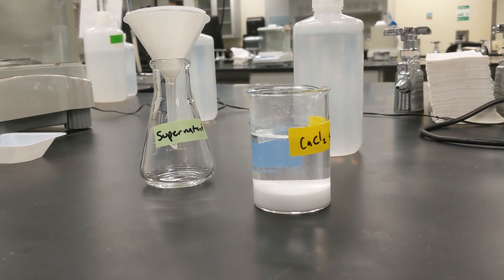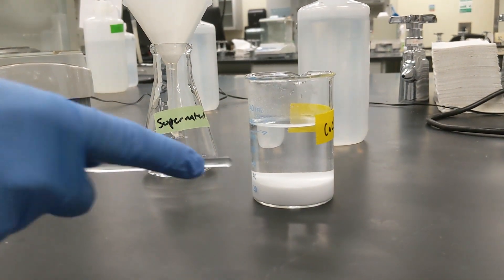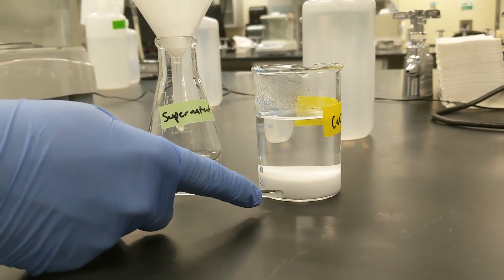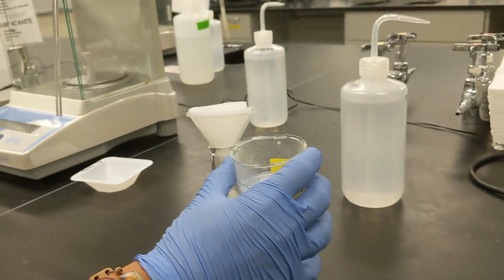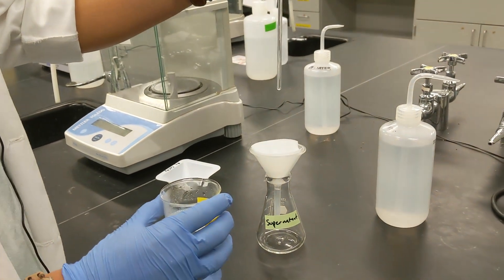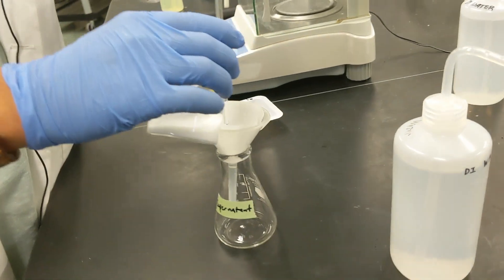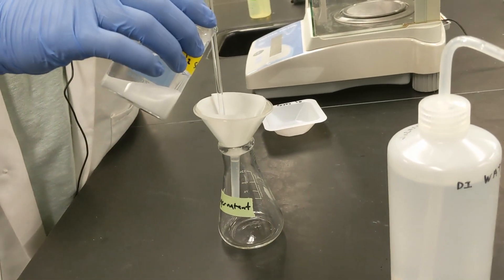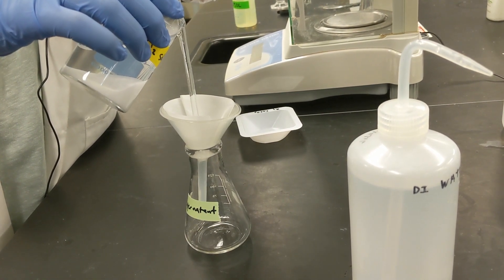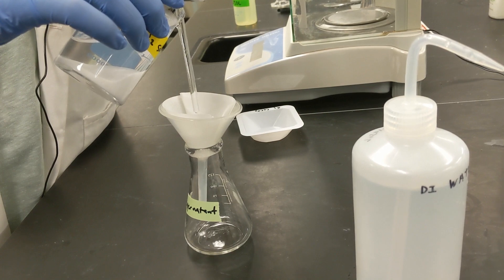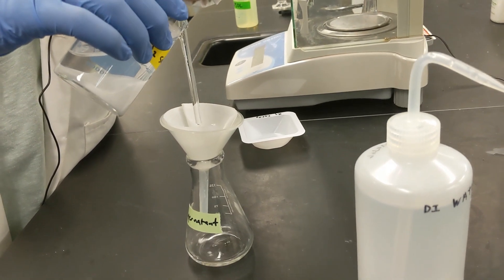So now we're going to filter our supernatant from our precipitant here. So you can see that they've formed two different layers. Our precipitant sitting at the bottom with the rest of our supernatant sitting at the top. So the way we're going to filter this is we're going to have this glass stir rod. We're going to carefully, without disturbing the solid, pour out some of the supernatant down the glass stir rod. So that way I'm not moving much of the solid that's sitting at the bottom of the beaker.